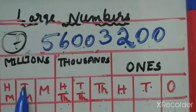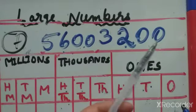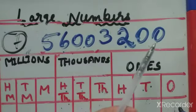Then the millions place: million, ten million, hundred million — like that. Now we have to write the numbers in the international place value chart.